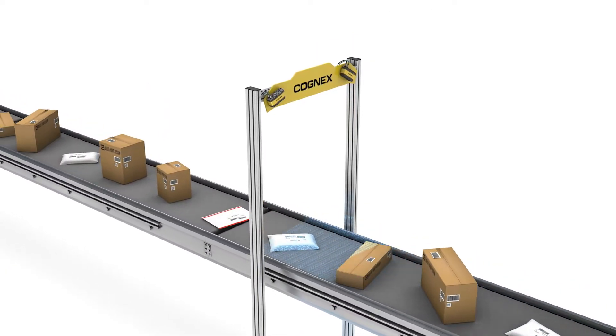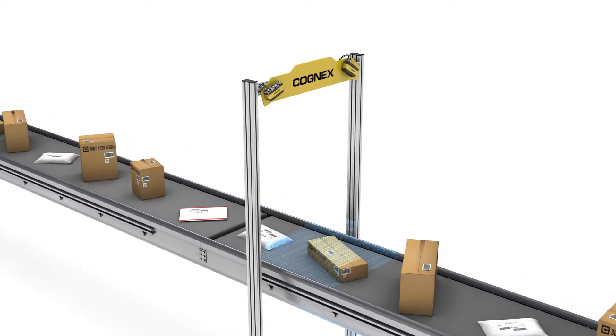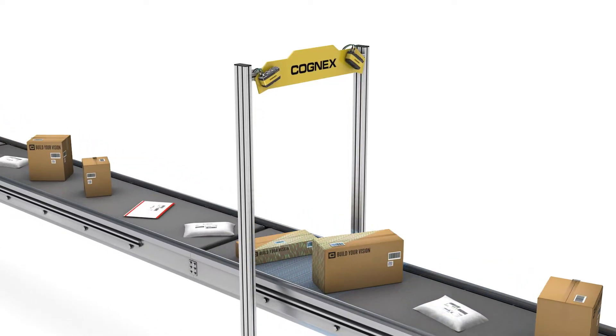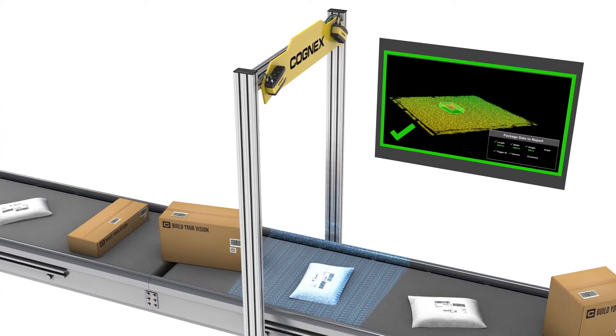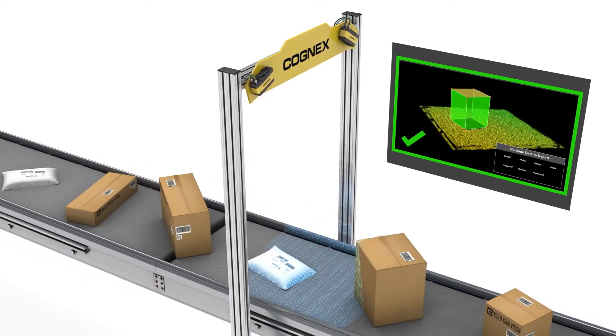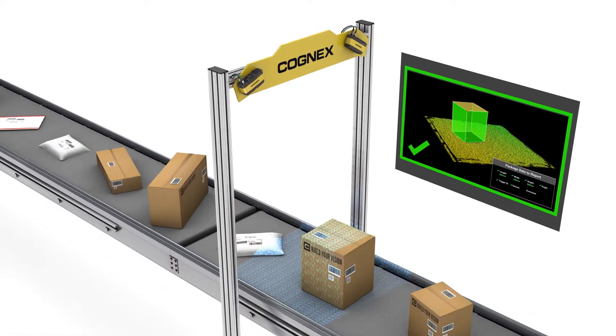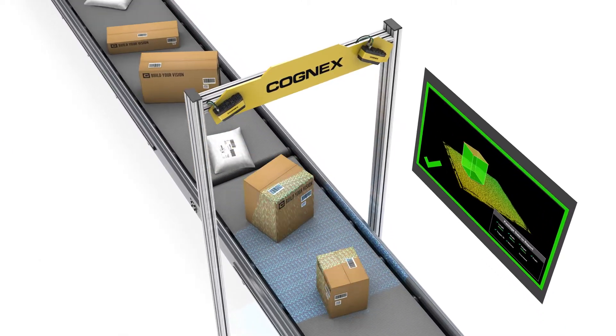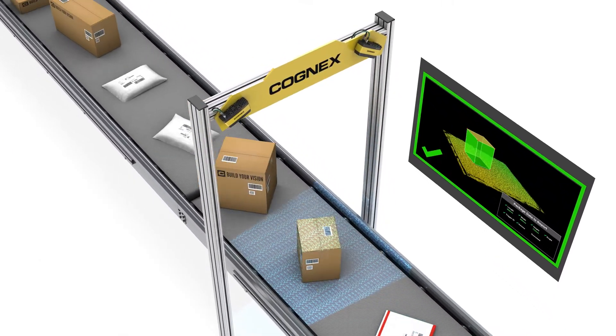Order accuracy is critical for every retailer, but manual checks just aren't enough in today's high-speed fulfillment operations. In addition to robust barcode reading, 3D and 2D dimensioning systems add yet another layer of verification, capturing dimensional data to confirm the correct item gets through to the customer.